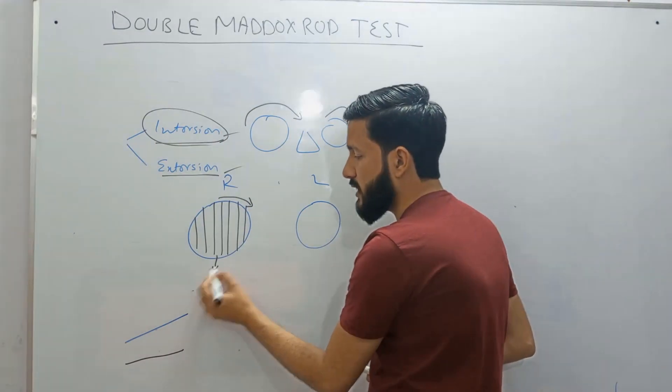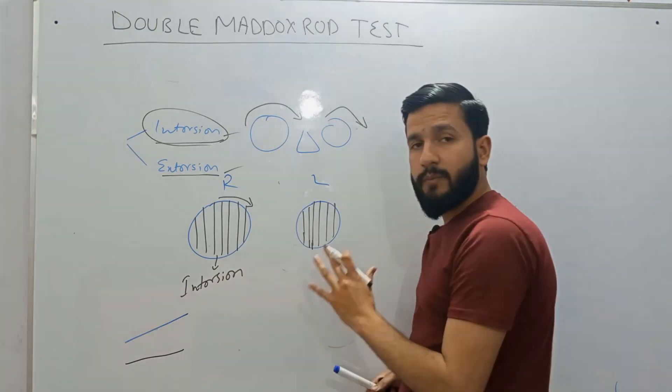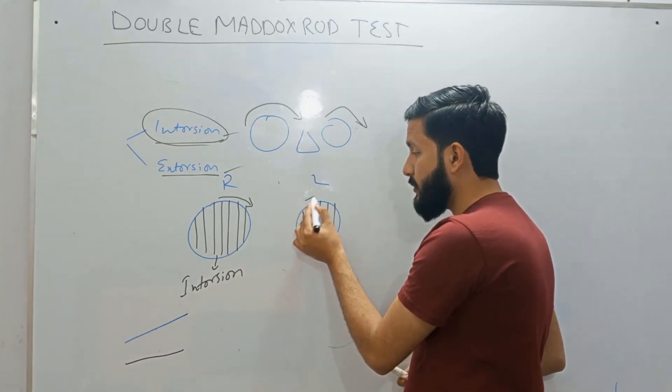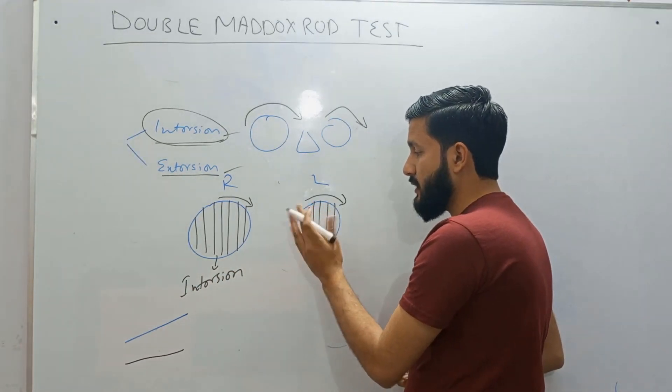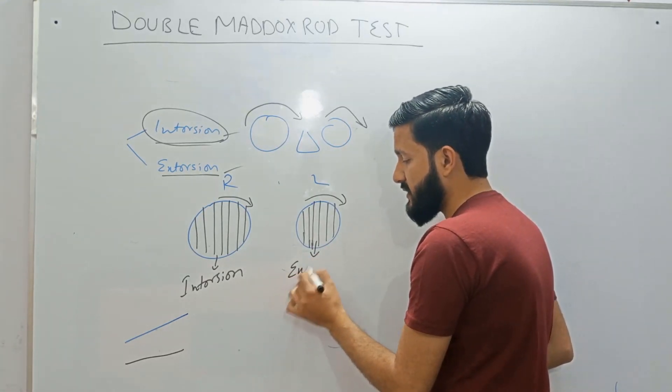That will indicate to you that patient has intorsion in this eye. And if the patient moves Maddox rod in this direction, towards the outside, then it indicates that patient has extorsion.